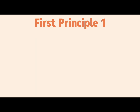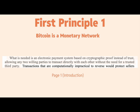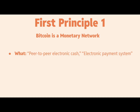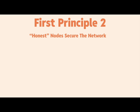First Principle One: Bitcoin is a monetary network. This comes directly from the Bitcoin white paper, where we see 'peer-to-peer electronic cash system' and 'peer-to-peer version of electronic cash.' A little further down, the introduction says 'electronic payment system without the need for a trusted third party.' So according to Satoshi Nakamoto, Bitcoin is defined as peer-to-peer electronic cash — an electronic payment system helping us transact directly with each other without a trusted third party.